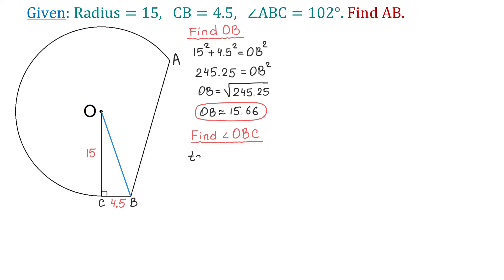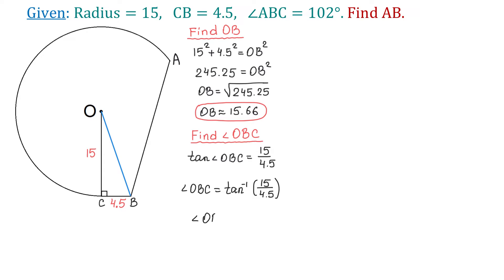So, tangent of angle OBC equals 15 divided by 4.5. To find angle OBC, we take the inverse tangent of 15 over 4.5. Using a calculator in degree mode, angle OBC is approximately 73.3 degrees.